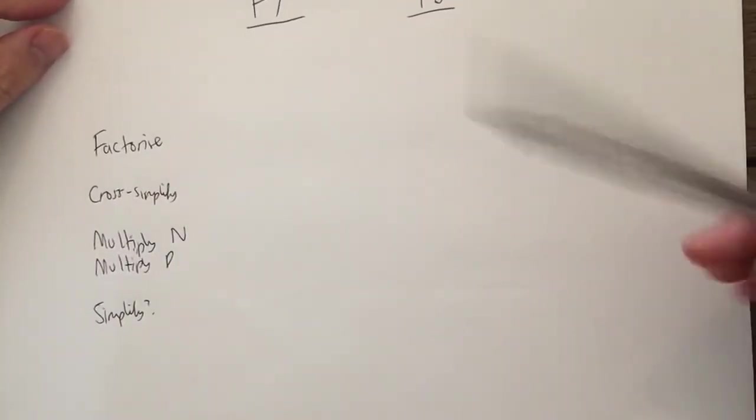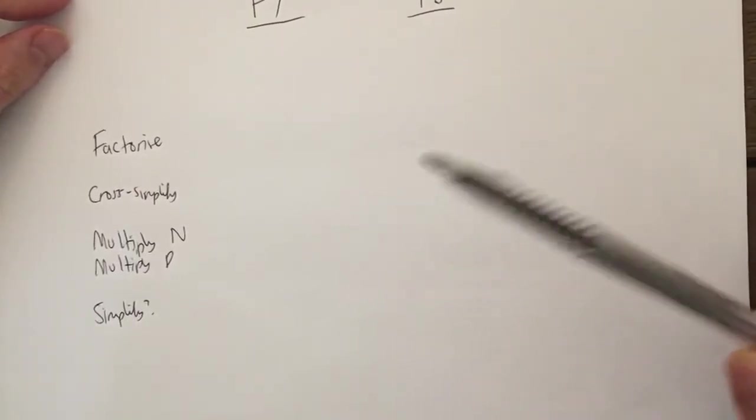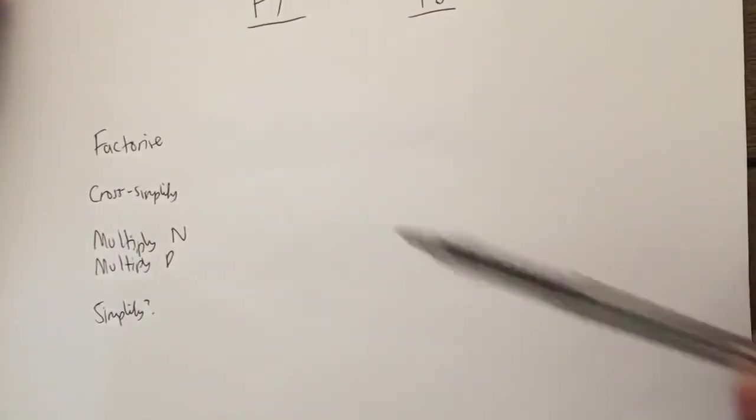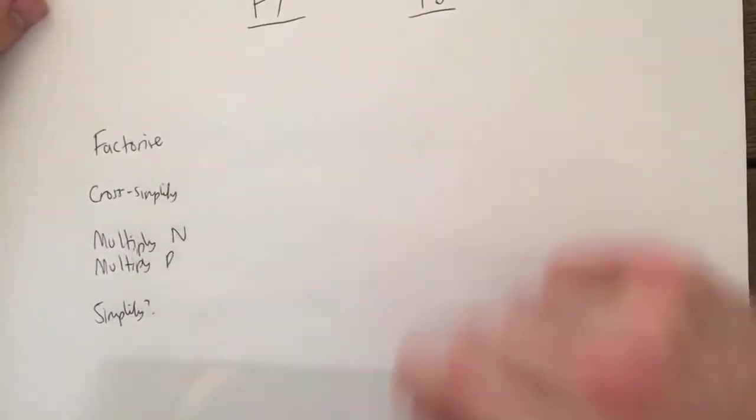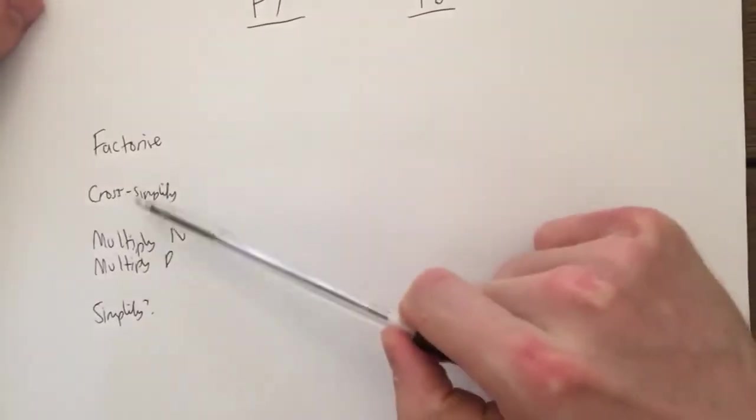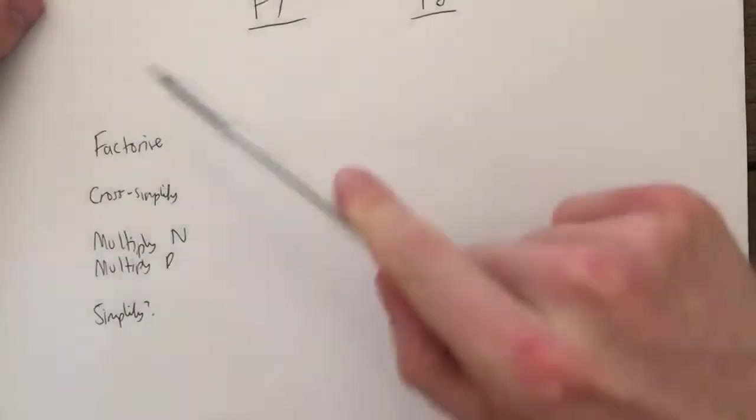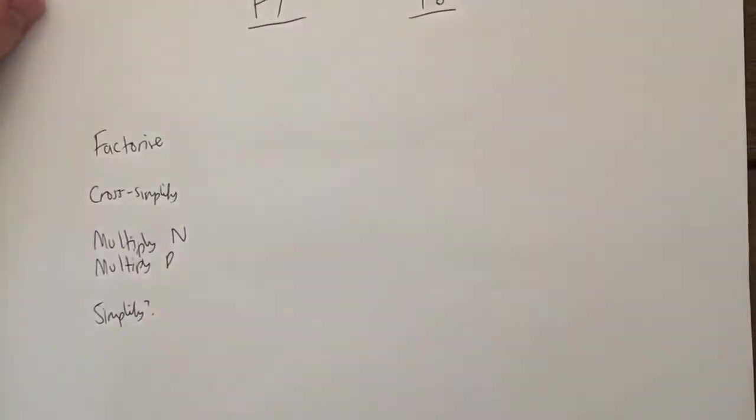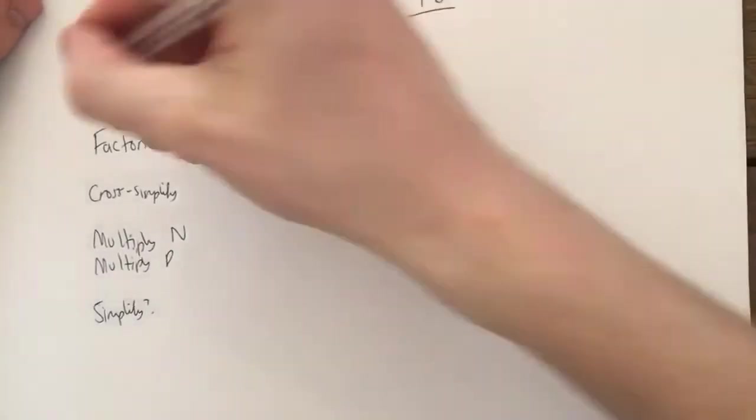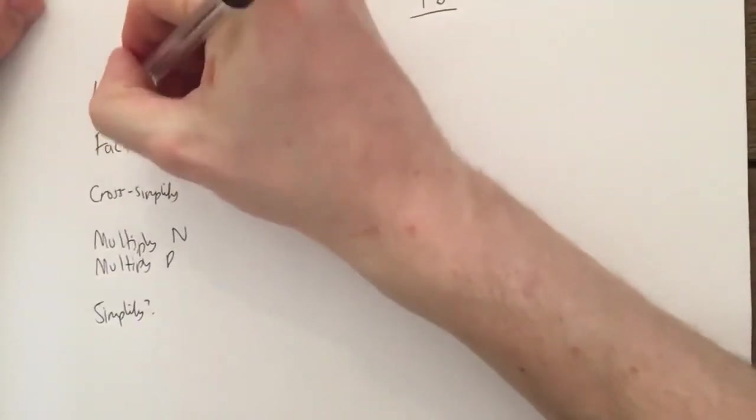Something that we need to consider now is if they ask us to divide algebraic fractions, we're going to follow the exact same process but there's going to be a difference at the beginning. Because we're dividing by algebraic fractions, we're going to do what we normally do when we divide fractions, which is keep change flip at the beginning.